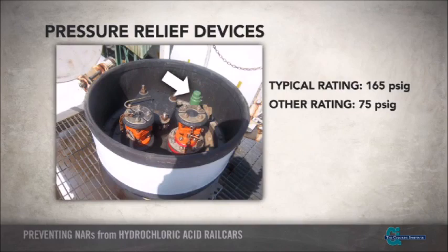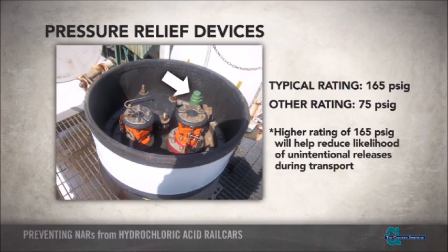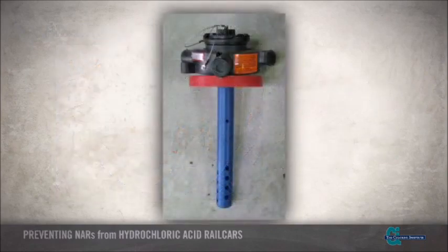Both ratings are acceptable; however, a higher rating of 165 PSIG will help reduce the likelihood of an unintentional product release from the relief device due to pressure surges in the car while in transport. It is also recommended that a reclosing safety relief device, such as a spring-loaded pressure relief valve, be used to help reduce the likelihood and size of an NAR.